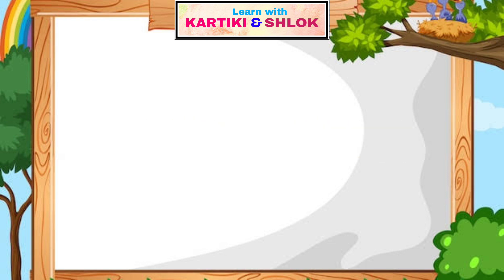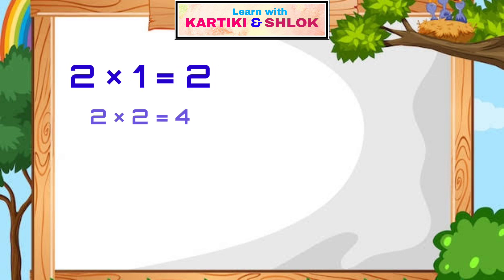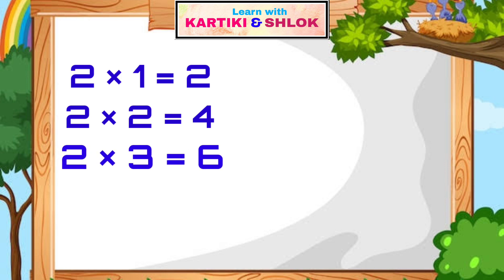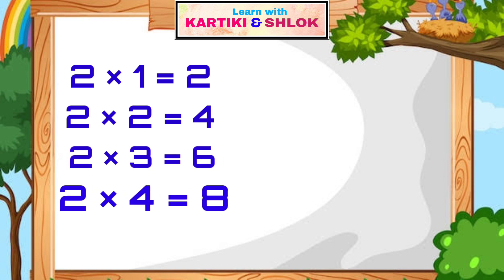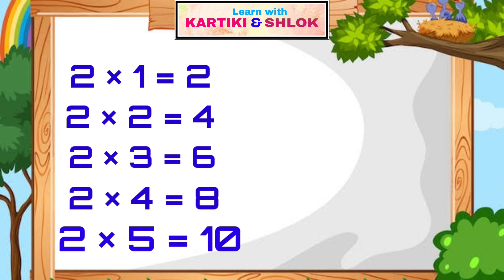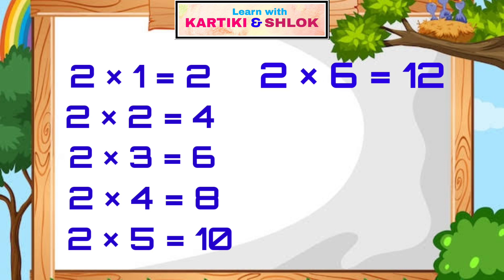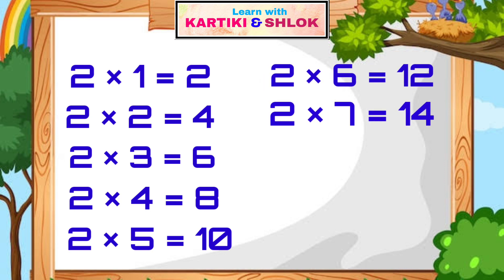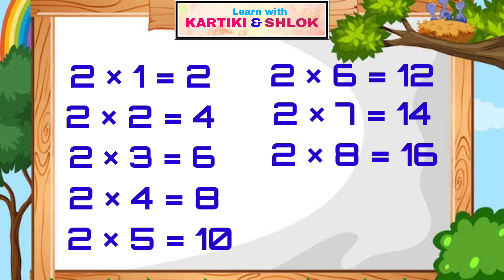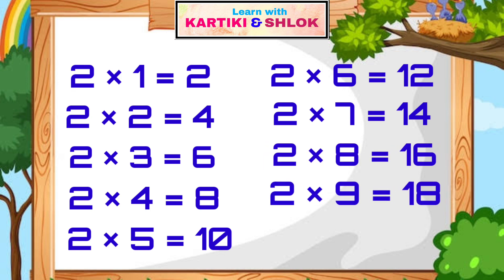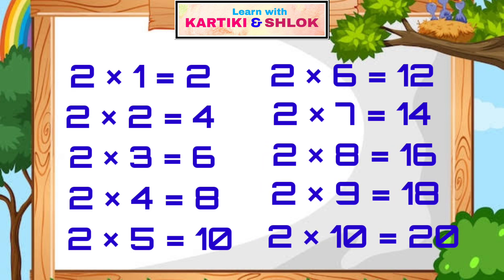2 times 1 is 2, 2 times 2 is 4, 2 times 3 is 6, 2 times 4 is 8, 2 times 5 is 10, 2 times 6 is 12, 2 times 7 is 14, 2 times 8 is 16, 2 times 9 is 18, 2 times 10 is 20.